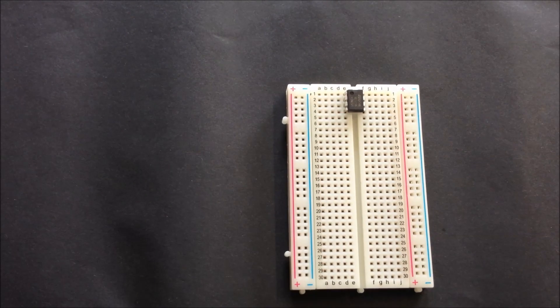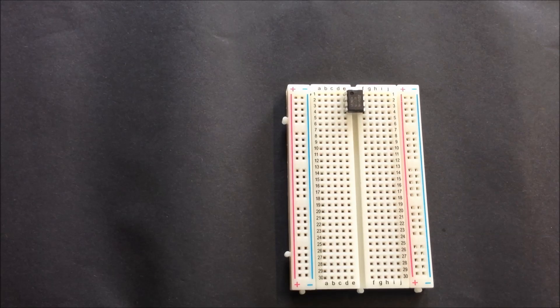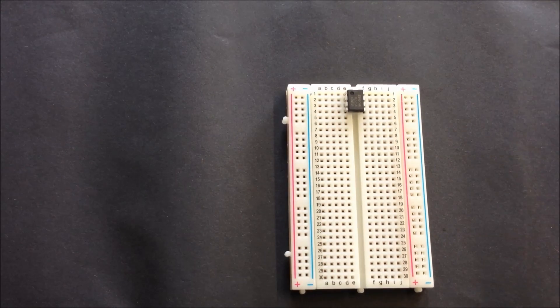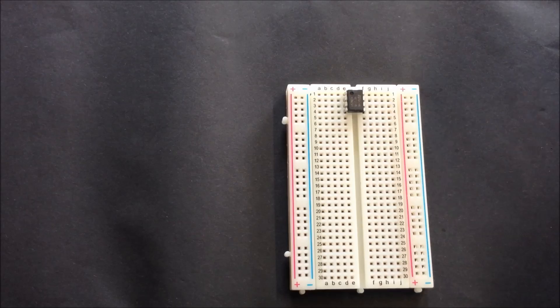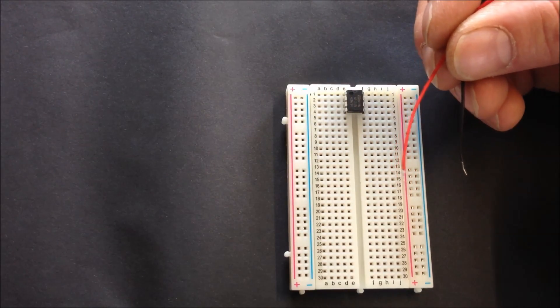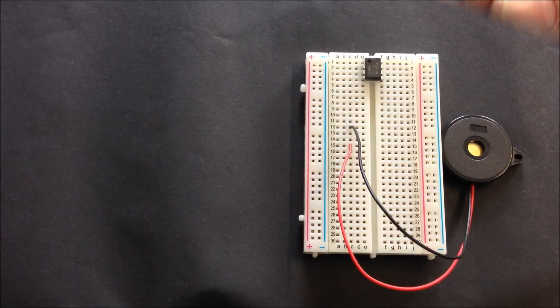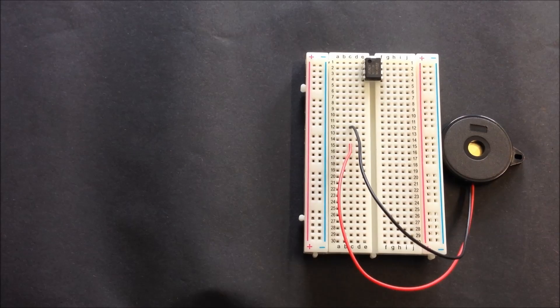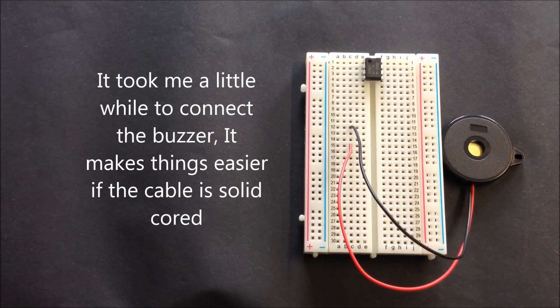Now it's simply a case of building up the circuit according to the drawing we had. The first thing we're going to do is put a buzzer which is going to be our output. This is a bit fiddly because the wires are flexible. After a bit of fiddling I've managed to push the flexible wires into the breadboard, and we've got our buzzer connected.